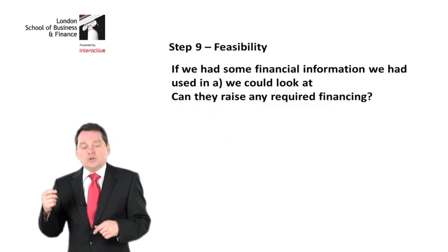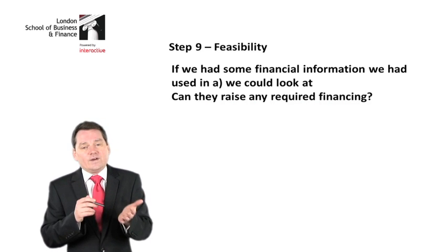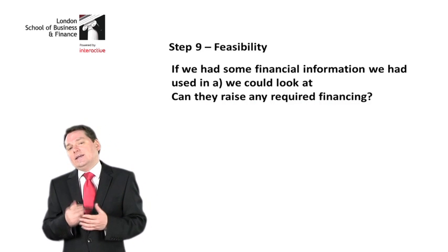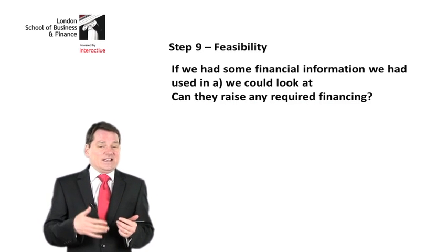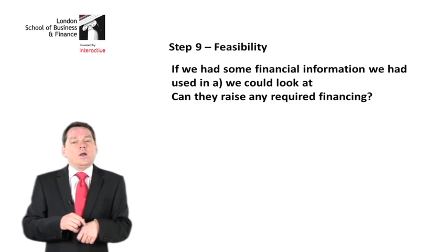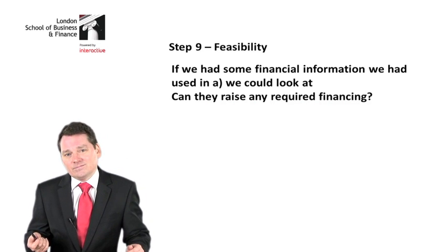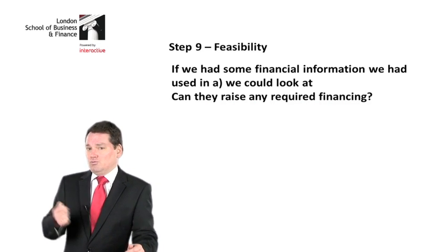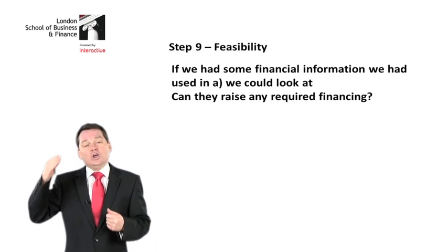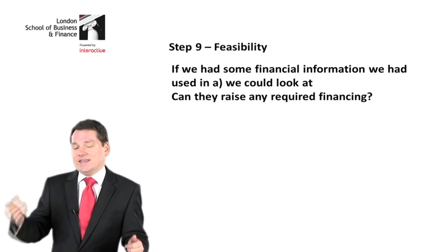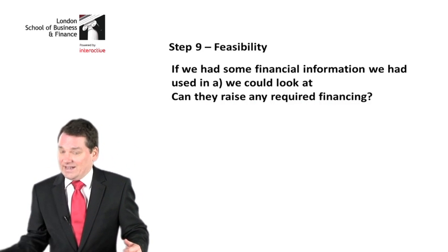Feasibility. If we had financial information in Part A, we could use it. A common thing in the exam is a small balance sheet or profit and loss account — in this particular question we don't get that. But if you had a balance sheet, you could look at their gearing: do they have any money? You could also look at their current ratio. Often in Part A there is a weakness — their gearing is very high — so in Part B you'd note that their gearing is very high and they can't invest, even though they would like to.